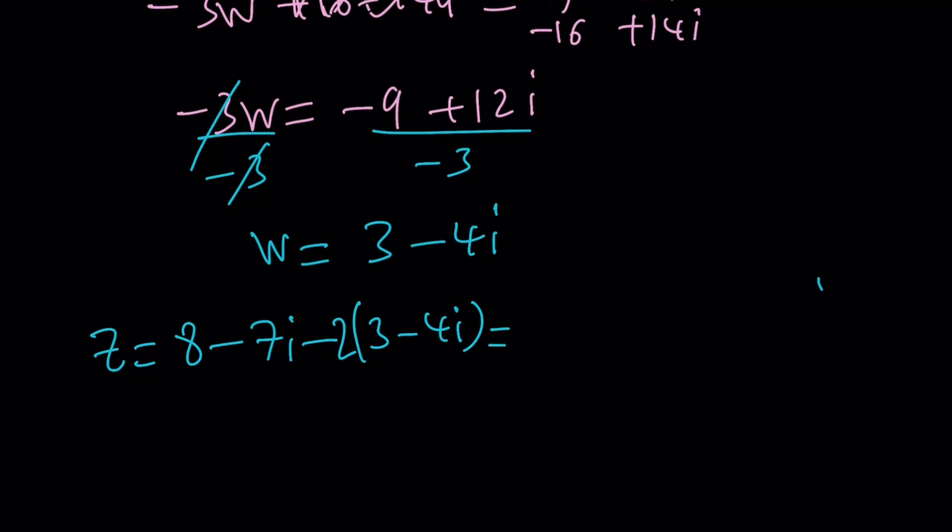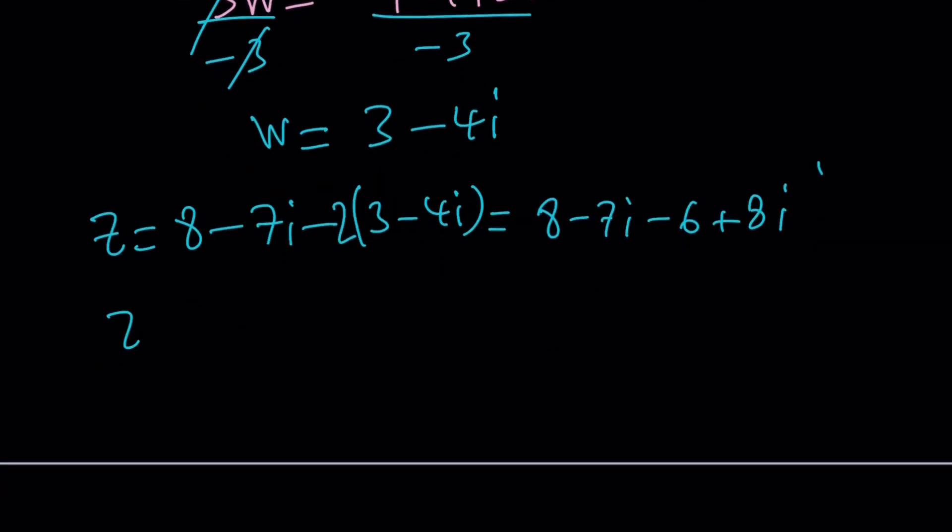There's a 2, which is obviously going to change things around here. So, that's going to be 8 minus 7i minus 6 plus 8i. And then, if you add 8 minus 6, that's going to give you 2 plus i. So, this is the z. This is the w. So, we solved the system. Good job.